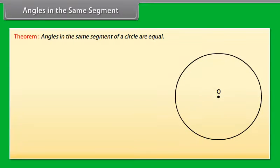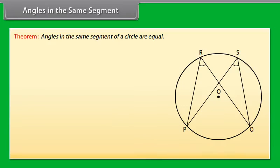Given: A circle with center O and the angles ∠PRQ and ∠PSQ in the same segment formed by the chord PQ or arc POQ. To prove: ∠PRQ is equal to ∠PSQ.